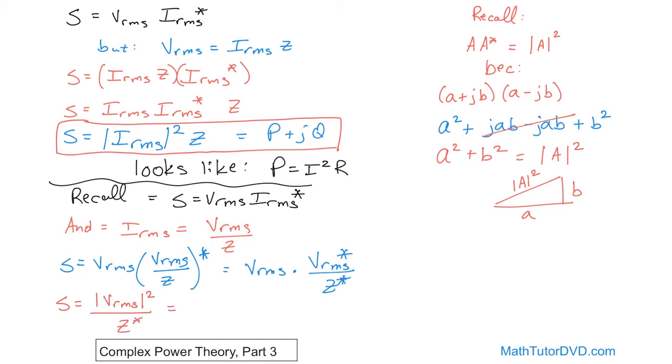So what we have on the top is magnitude V_RMS squared over Z conjugate. And don't forget, we're calculating complex power, this is just P plus jQ. This is incredibly important, because this looks like P is equal to V squared over R for the DC case. If you know the voltage across the resistor, you square it, you divide by R, you get the power. That's in watts.